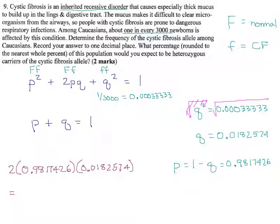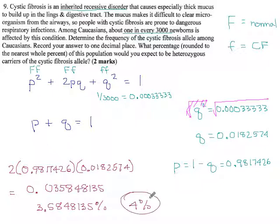So going to the calculator 2 times 0.9817426 times 0.0182574, I get 0.035848135 would be my frequency for the heterozygous group. You can multiply that by 100% if you like, and you'll get 3.5848135%. Oh, here they say round to the nearest whole percent, so to the nearest whole number this is closer to 4%. So we could say something like 4% of this population is carrying the CF trait, but does not actually have it. They're heterozygous.